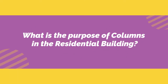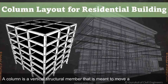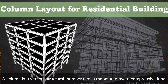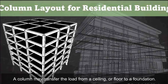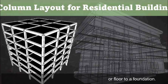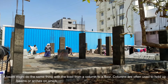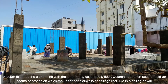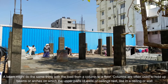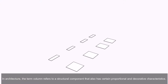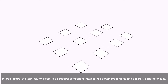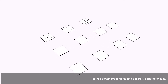What is the purpose of columns in a residential building? A column is a vertical structural member meant to carry a compressive load. A column may transfer the load from a ceiling or floor to a foundation. Columns are often used to hold up beams or arches on which the upper parts of walls or ceilings rest. In architecture, the term column refers to a structural component that also has certain proportional and decorative characteristics.